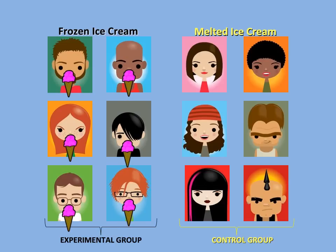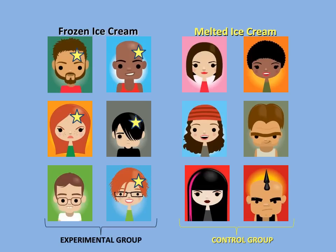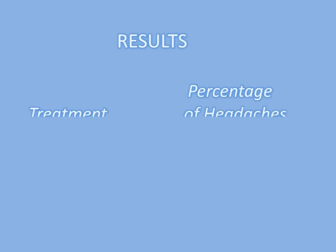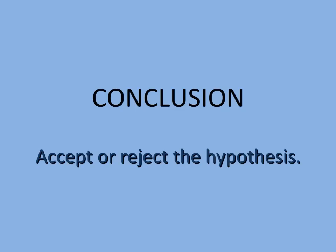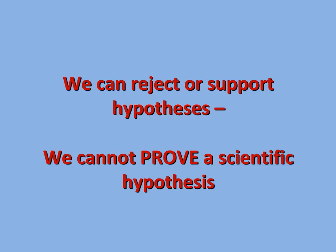Let's give them their treatments and wait to see who gets a headache. Five out of six subjects who ate frozen ice cream got a headache. Now it is time to analyze our results. A whopping 83% of those who ate frozen ice cream developed headaches, while none of those who ate the melted ice cream did. We need to make a conclusion — should we accept or reject our hypothesis? Keep in mind, we can only reject or support hypotheses. We cannot prove them. The word prove in science means that it will happen 100% of the time, and we cannot perform enough tests to show a hypothesis is always correct.